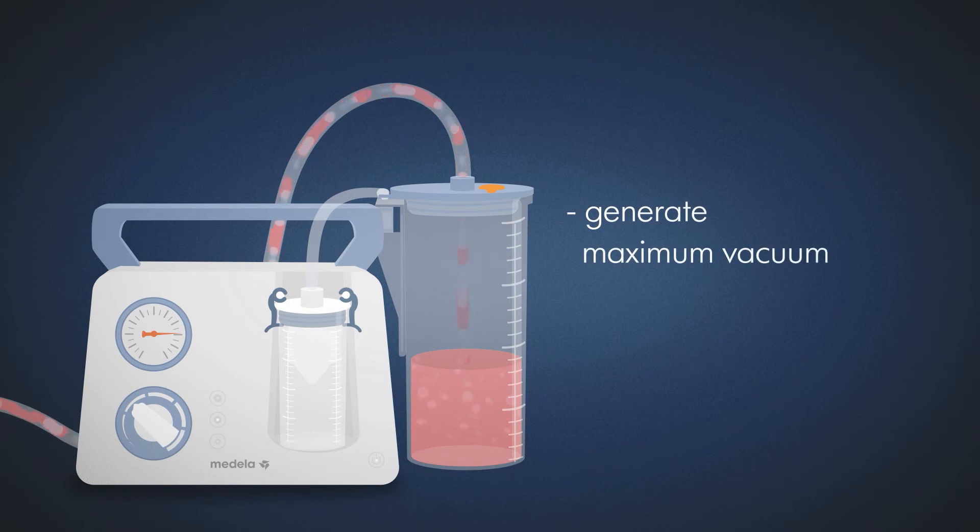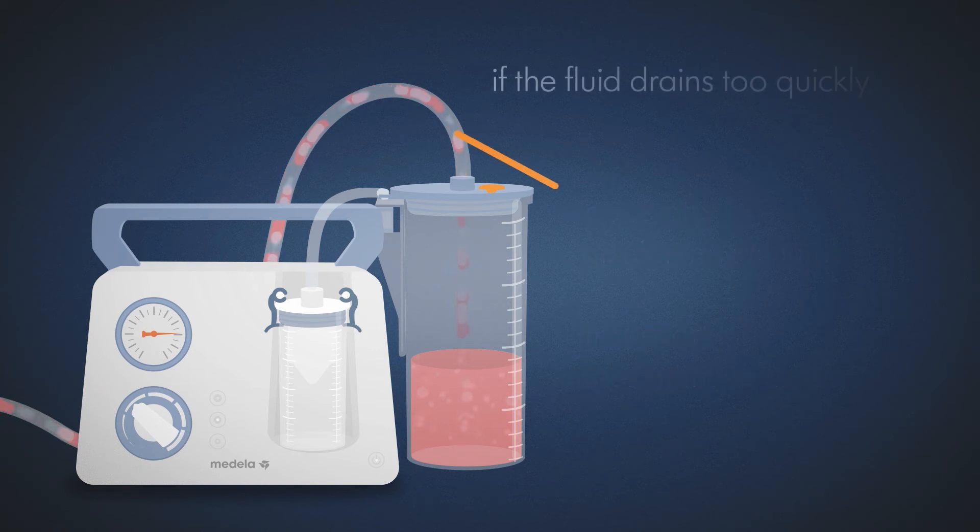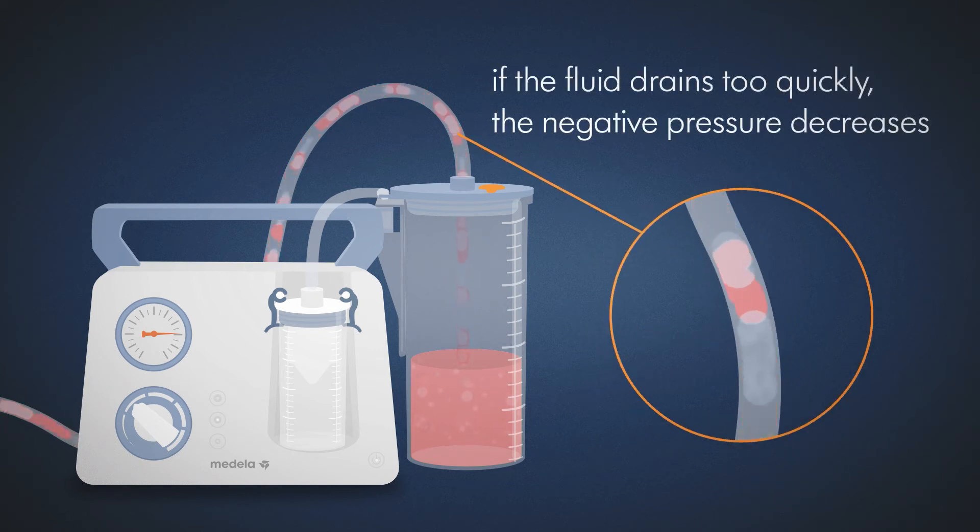A pump can generate a maximum vacuum and transport a maximum volume. If the fluid drains too quickly, the negative pressure decreases and cannot be maintained.